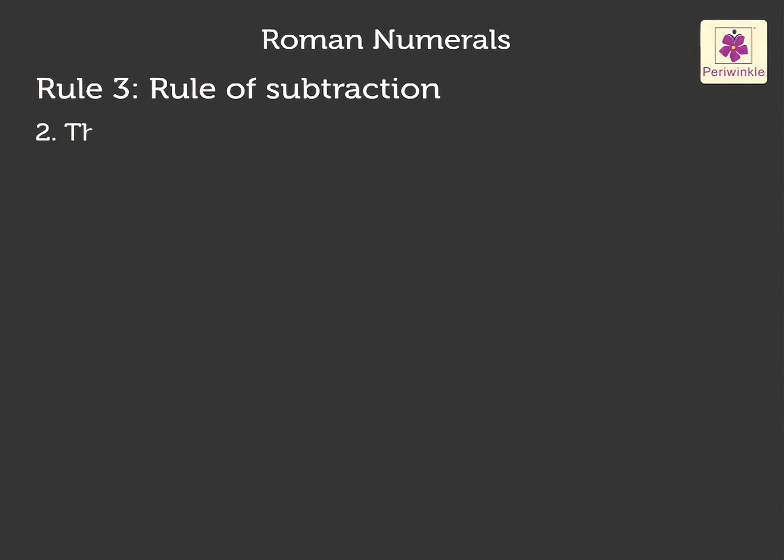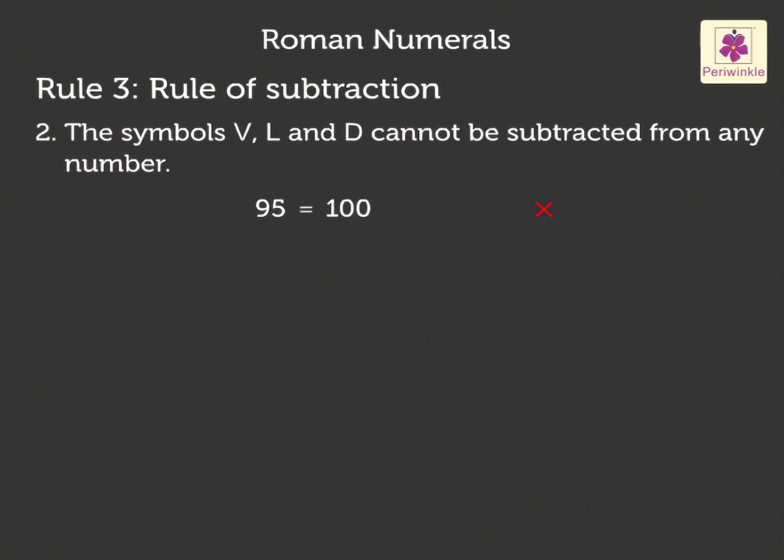2. The symbols V, L and D cannot be subtracted from any number. For example, 95 cannot be written as 100 minus 5 is equal to VC. 95 should be written as 90 plus 5 is equal to XCV.